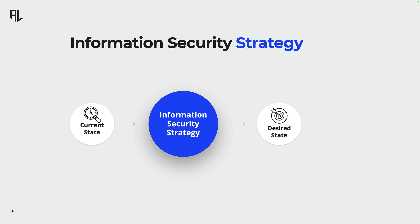This is where your business stands today in terms of information security. The so-called desired state is basically a snapshot of everything security-related at some point in the future.